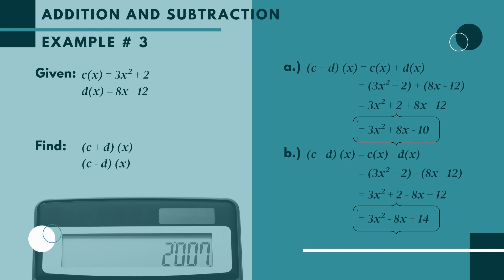Now example number 2 in subtraction, letter b. (c - d)(x) is equal to c(x) minus d(x). Substituting c(x) as 3x squared plus 2, minus d(x) which is 8x minus 12. Copy 3x squared plus 2. Negative times positive 8x is negative 8x, and negative times negative 12 is positive 12. Combining like terms: copy 3x squared minus 8x, and 2 plus 12 is positive 14. Our final answer is 3x squared minus 8x plus 14. This is now the value of (c - d)(x).